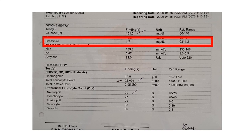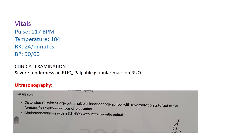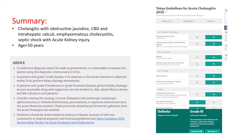Her creatinine was 1.7 mg per deciliter, suggesting acute kidney injury. On examination, she was tachycardic with pulse rate of 117 beats per minute, temperature of 104 degrees Fahrenheit, and blood pressure of 90/60 mmHg, suggesting the patient was in shock. She had tender right upper quadrant with a palpable globular mass. Ultrasonographic examination revealed hepaticolithiasis, common bile duct calculus, and most importantly suspected emphysematous cholecystitis. Tokyo Guideline 2018 classified this as grade 3 cholangitis with emphysematous cholecystitis.